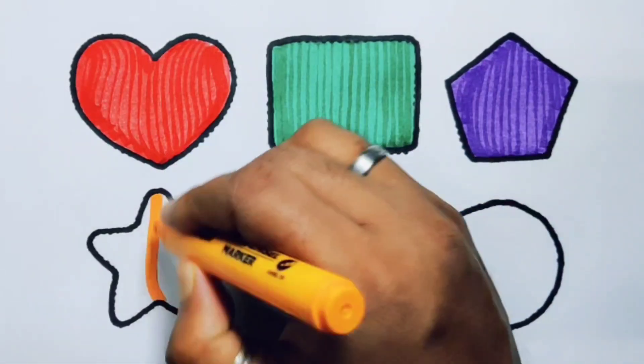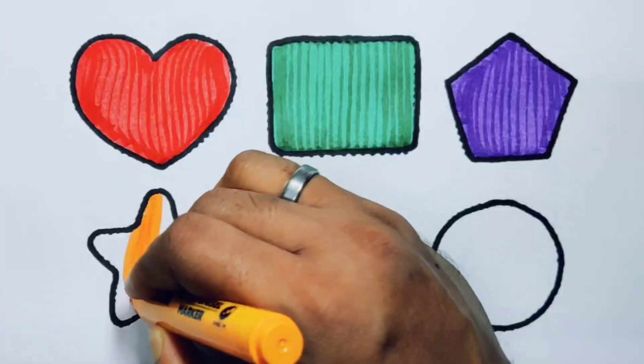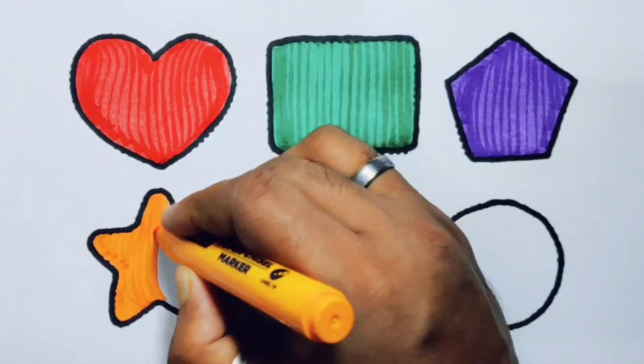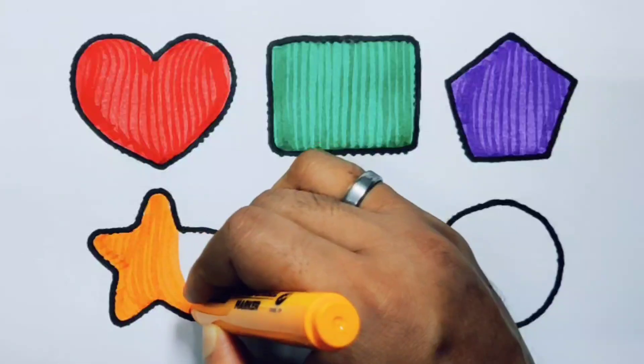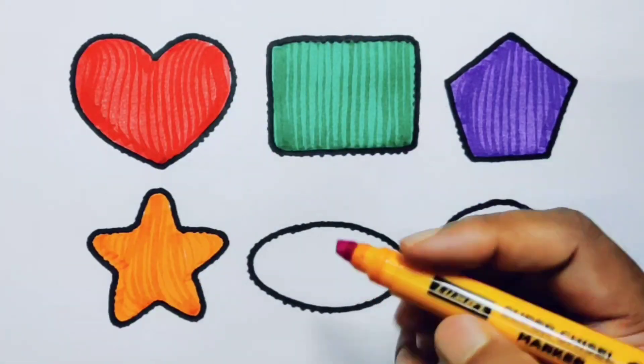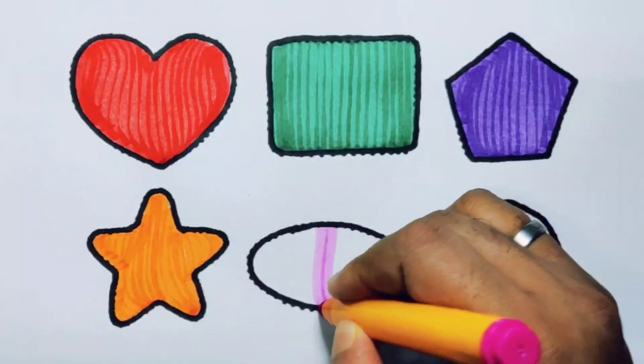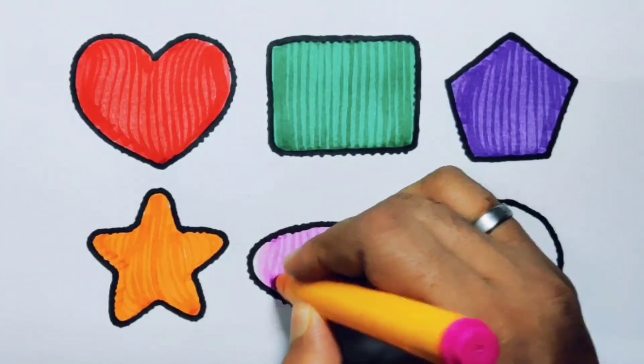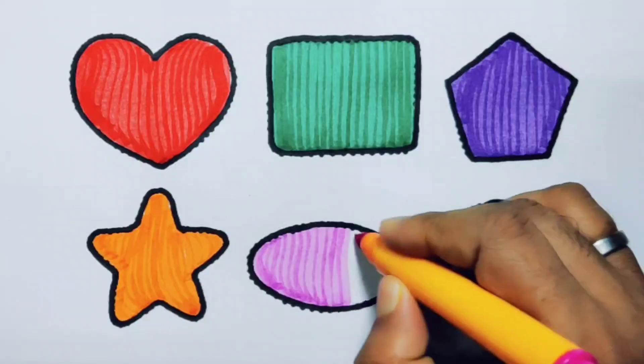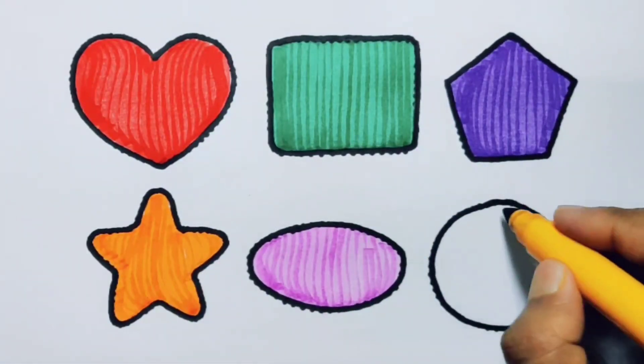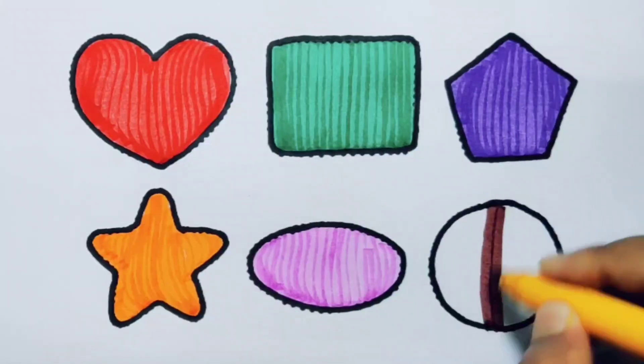Orange color, star. Pink color, oval. Chocolate color, circle.